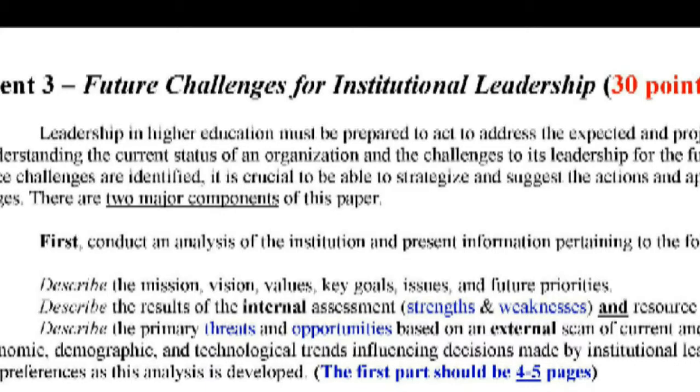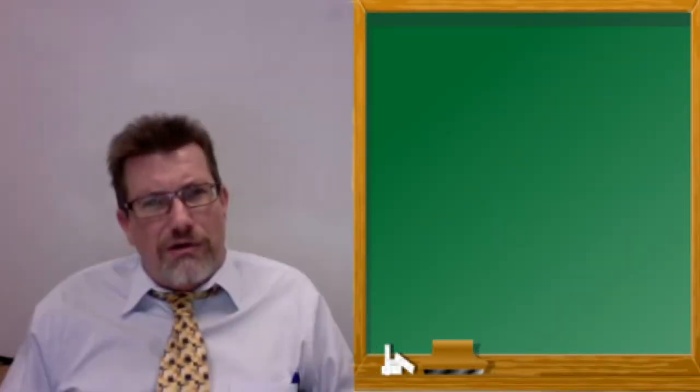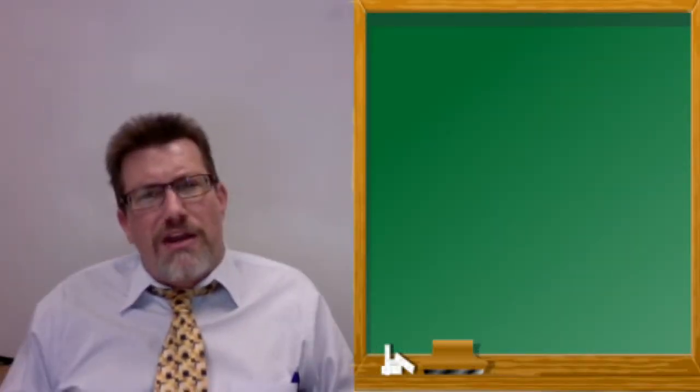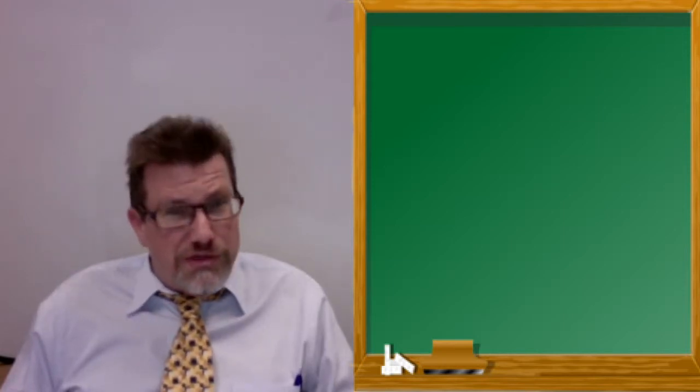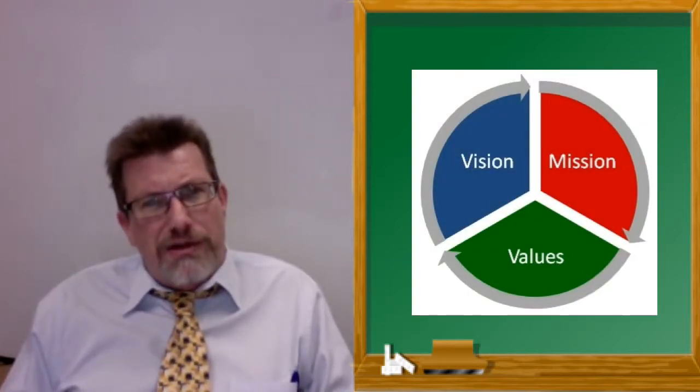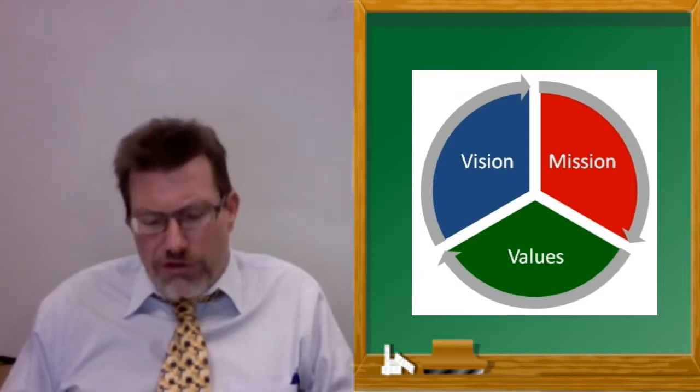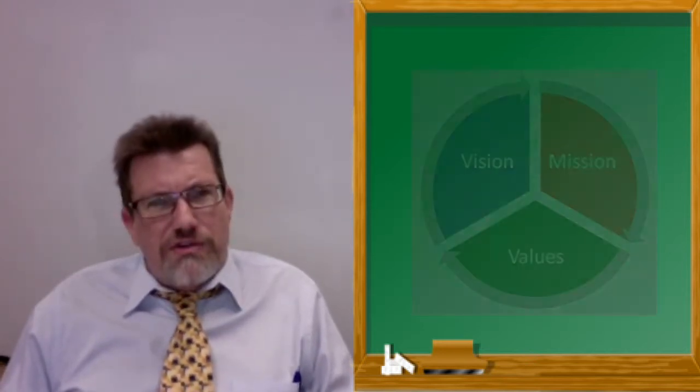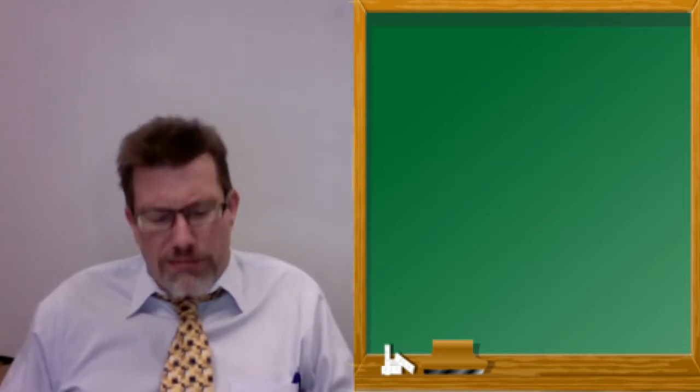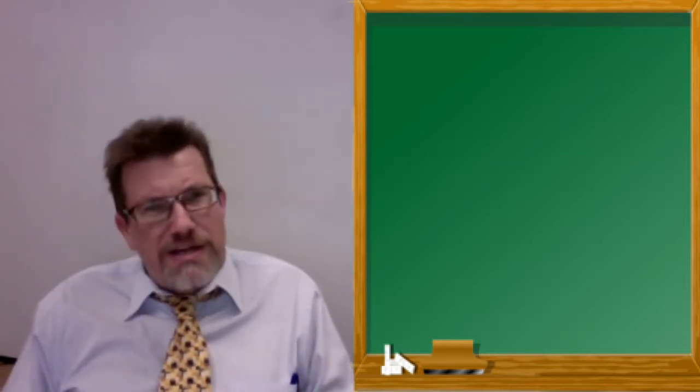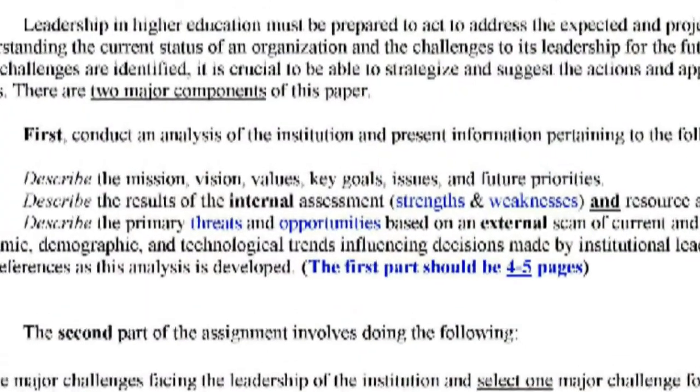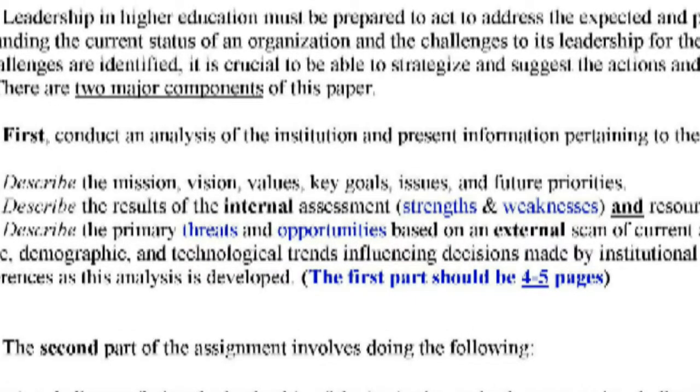By now, I want you to, you've already done a document review, and you've surveyed where the strategic plan is. You should know about the mission and the vision, the key values and priorities and goals. And I want you to describe those for me in part one, not cut and paste, but simply describe the mission, the vision, the values, those key goals, the main issues and future priorities.